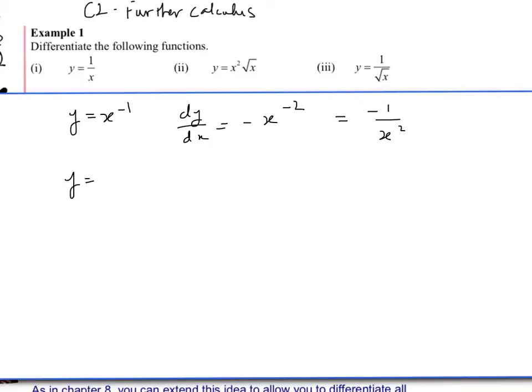Similarly with the second example, we've got x² times x^(1/2). When we're multiplying, we're adding the powers. That becomes 2.5. I'm going to write that as a fraction, so it's 5/2. Therefore dy/dx, bring the power down, so 5/2, take 1 away from the power. So 2.5 becomes 1.5, which we can write as 3/2.